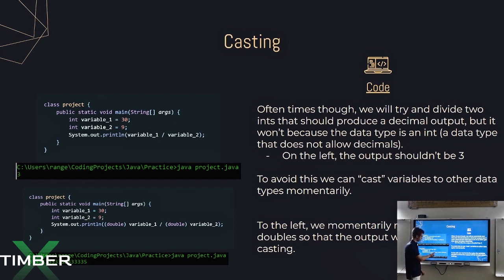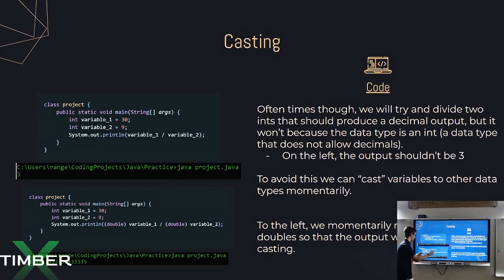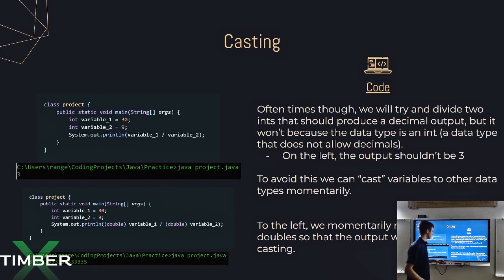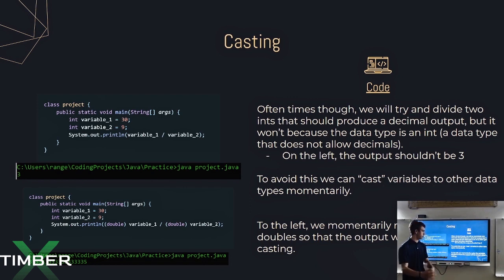In this case, we're going to make variable_one and cast it to a double — basically temporarily make it a double. Same for variable_two, we're going to temporarily make it a double. Then we output that value, and that's going to be the correct value of 3.3 repeating. We momentarily make the variables double so that the output would be correct using casting.